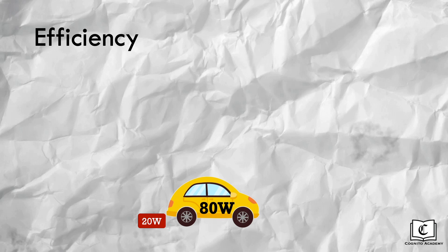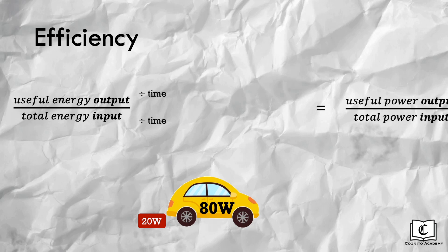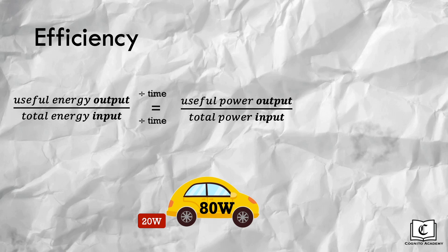In layman terms, efficiency is just how much of the energy that was supplied is actually used to produce useful work. Hence, it is given by useful energy output divided by total energy input. Dividing both the numerator and denominator by time, efficiency is also given by useful power output divided by total power input.